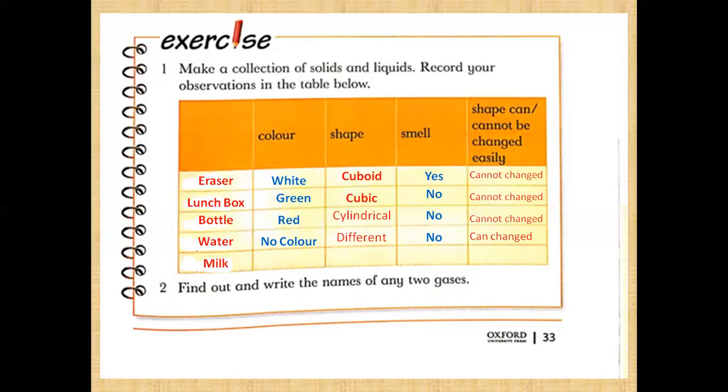The last example is milk. Milk is in the liquid state of matter. It has white color, different shapes like water, and it has smell. Milk can change — it can be converted into ice cream, and by boiling it can change into gas. So the first three examples are solids, and water and milk are examples of liquid.